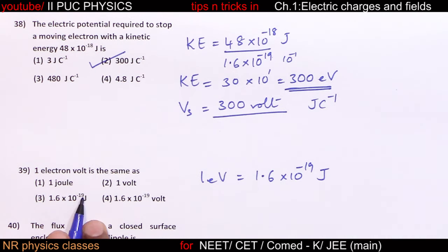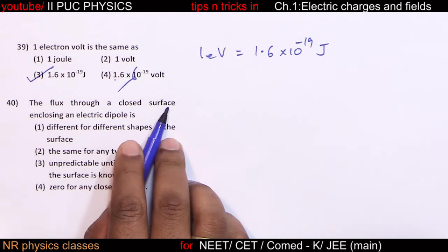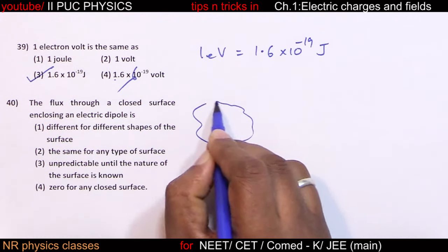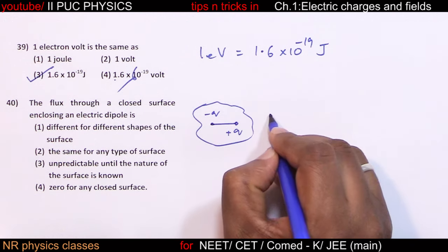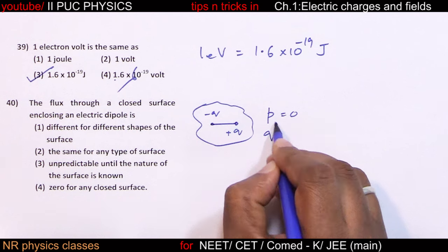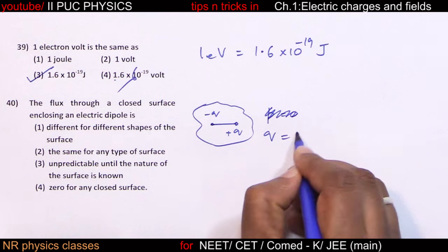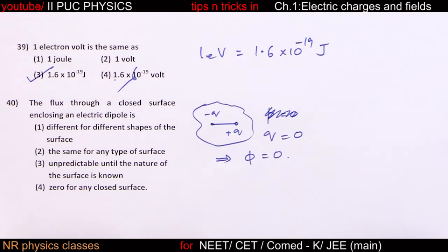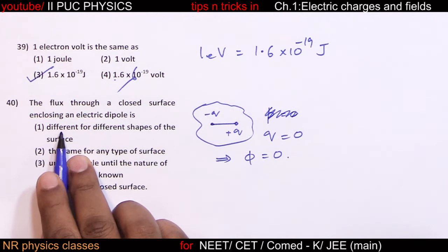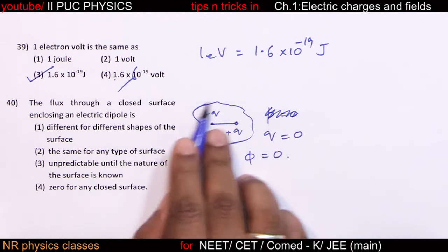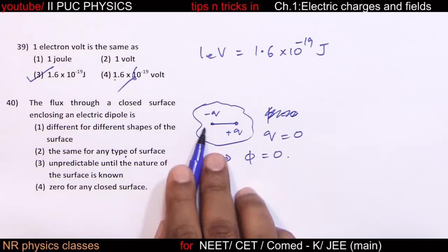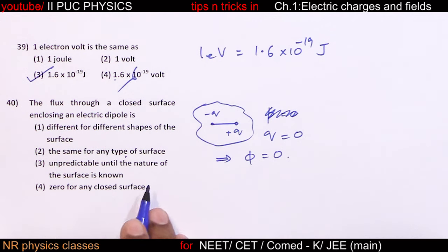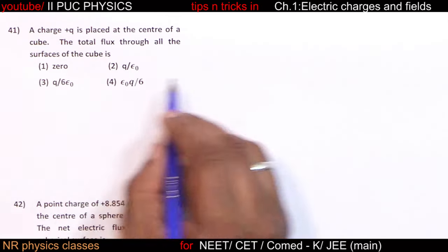The flux through a closed surface enclosing an electric dipole: a dipole has equal and opposite charges, so net charge = +Q - Q = 0. By Gauss's law, flux = net charge/epsilon naught = 0. This is zero for any closed surface regardless of its shape.